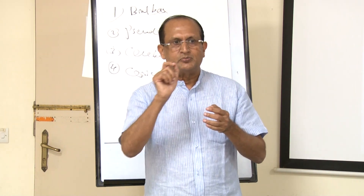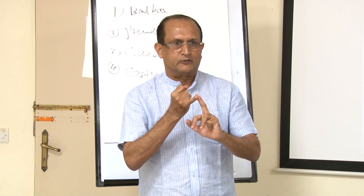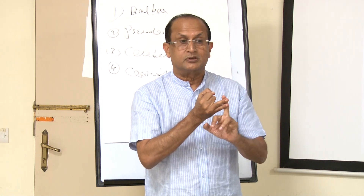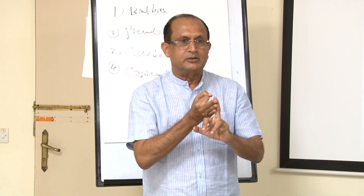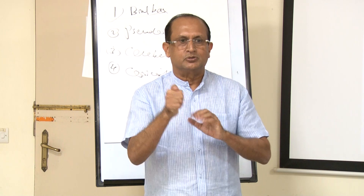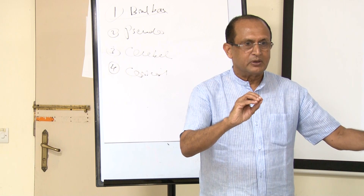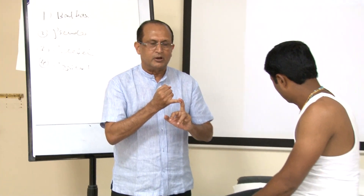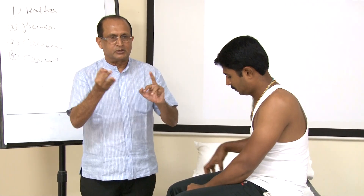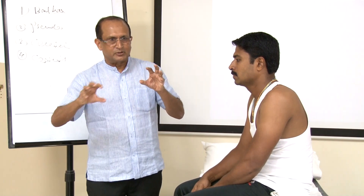Parkinsonism plus syndrome has four variants: multi-system atrophy, progressive supranuclear palsy, corticobasal ganglionic degeneration, Parkinsonism-dementia complex, and arteriosclerotic Parkinsonism. Multi-system atrophy has four subtypes: striatonigral degeneration, Shy-Drager syndrome, olivopontocerebellar atrophy, and Parkinsonism-motor neuron disease.